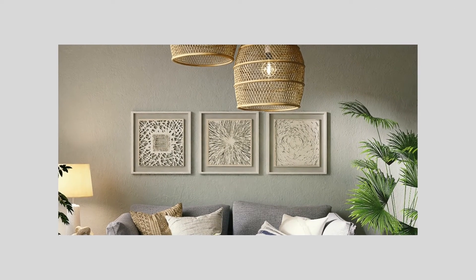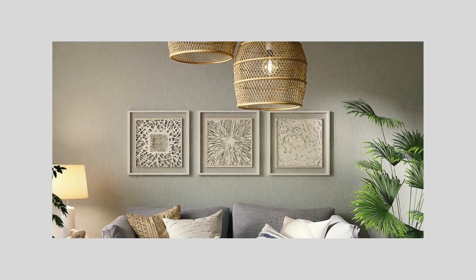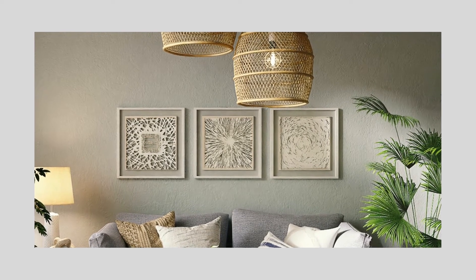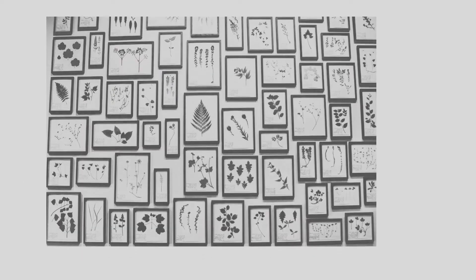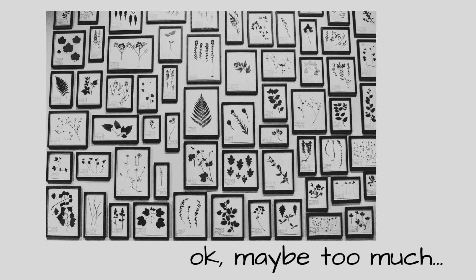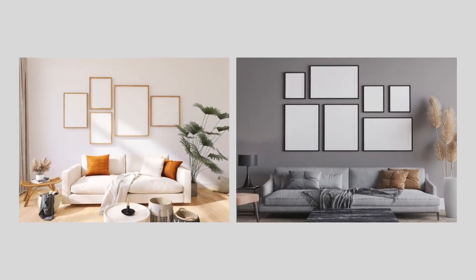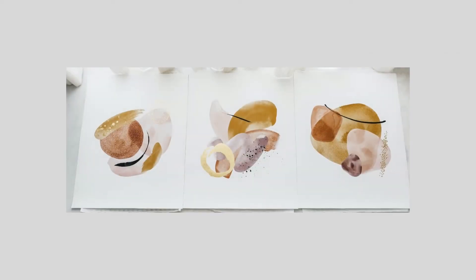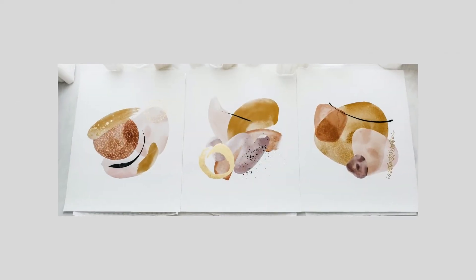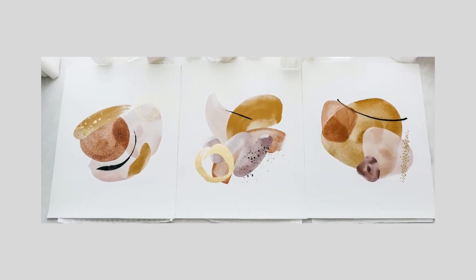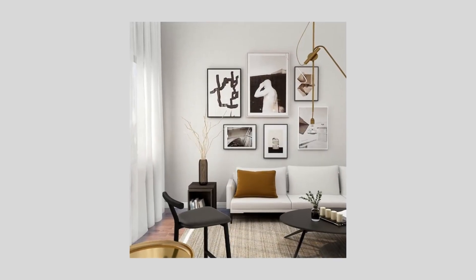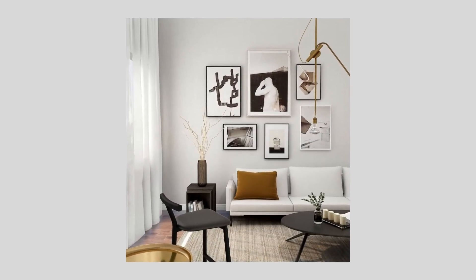Gallery walls are a great way to implement the Rule of Three, from three large pieces in a row all the way to a full wall of art. Play with these arrangements using an odd number of pieces. You can keep it cohesive by hanging similar art or using frames that are similar in material or color to bring everything together.